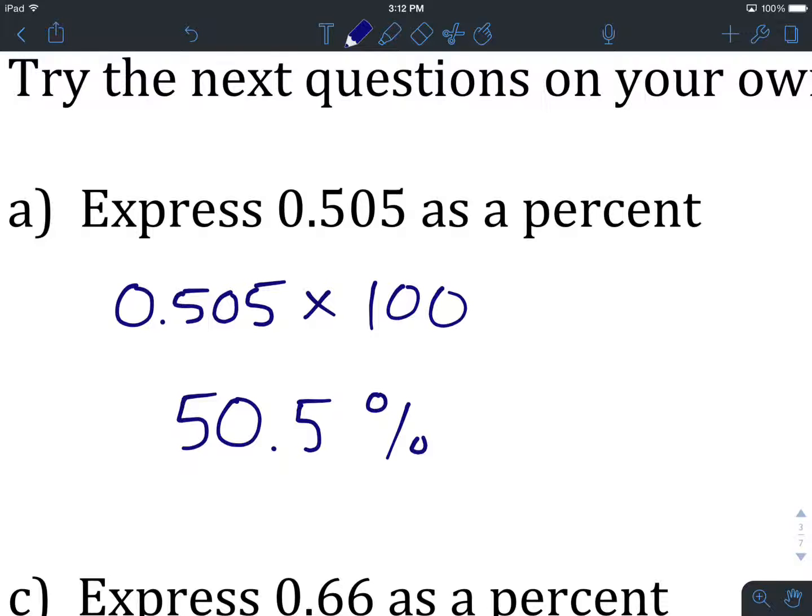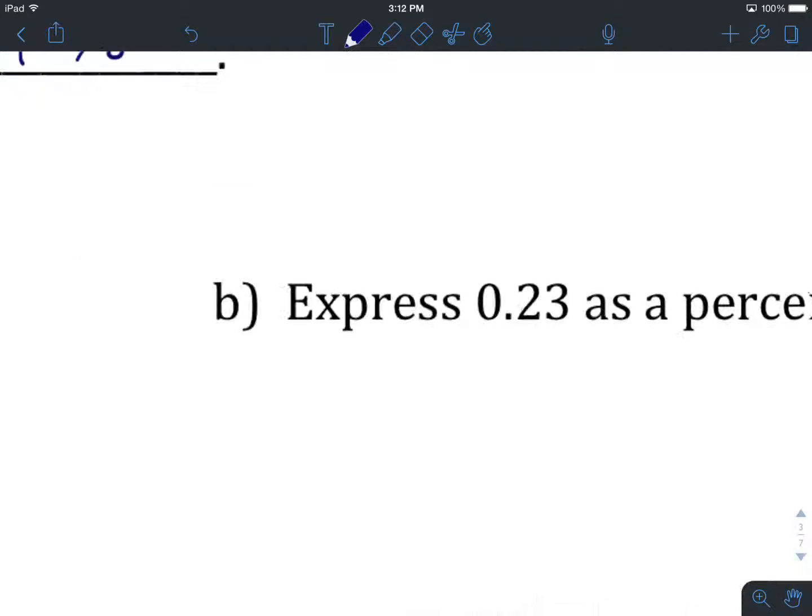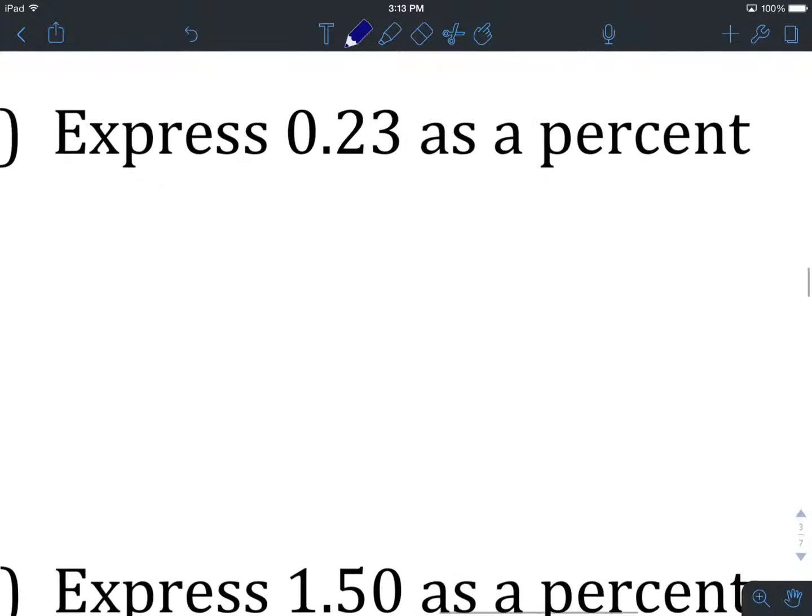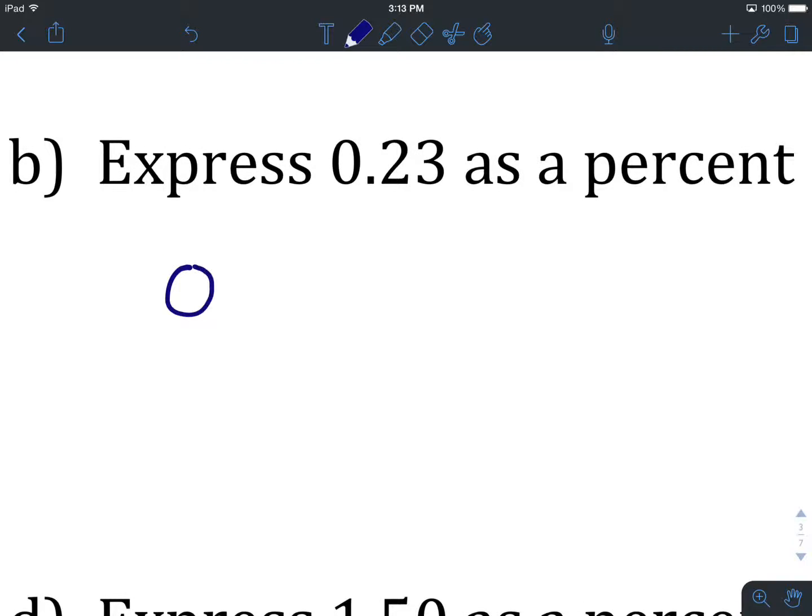You just leave it just like that. So let's have a look at b together, and then we'll try a couple of these on our own. Express 0.23 as a percent. So we start by taking our decimal, 0.23, multiplying it by 100. That will give us, when we type it into our calculator, 23, and we must remember the proper notation, percent. 23%.